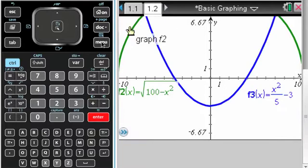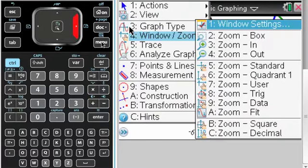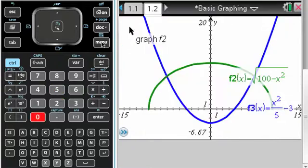Now I need to change my window, so I'm going to go to menu, and window, and settings. And I need more y values, so I'm going to do, I don't know, negative 15 to 15. Negative 6, that's fine, I don't really need more, and then maybe go up to 20. Alright, now I can see everything.